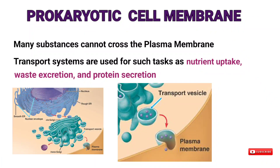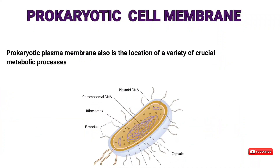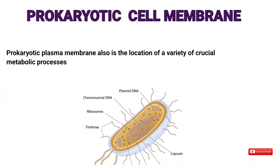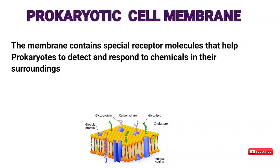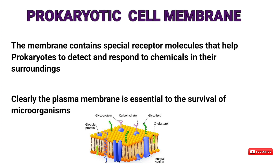Because many substances cannot cross the plasma membrane without assistance, transport systems are used for tasks such as nutrient uptake, waste excretion, and protein secretion. The prokaryotic plasma membrane is also the location of crucial metabolic processes — respiration, photosynthesis, and the synthesis of lipids and cell wall components. Finally, the membrane contains special receptor molecules that help prokaryotes detect and respond to chemicals in their surroundings.